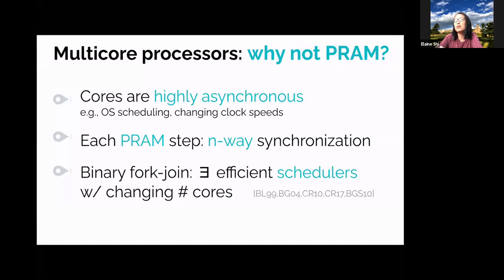It is possible to simulate a PRAM in the binary fork-join model by forking n threads in a binary tree-like fashion at every PRAM step, but this incurs a multiplicative log-n overhead. So naively converting PRAM algorithms to the binary fork-join model is not the best idea. The binary fork-join model has been extensively studied in the algorithms literature, and there exist efficient schedulers for this model even when the number of cores may change over time due to resource sharing or background jobs.